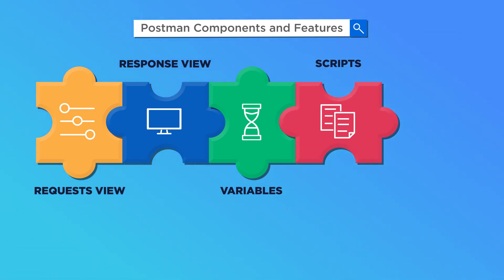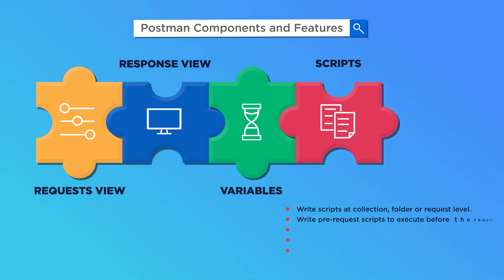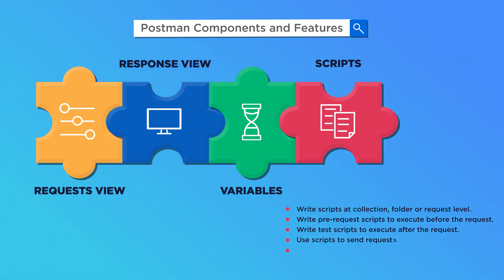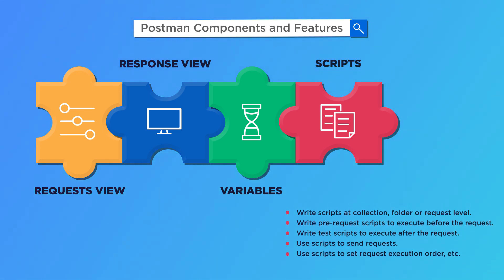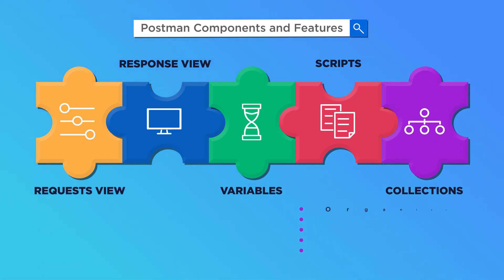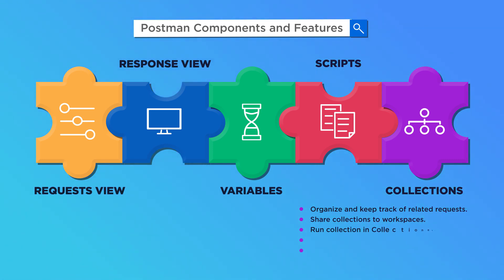The scripts component of Postman is used to write scripts at collection, folder, or request level; write pre-request scripts to execute before the request; write test scripts to execute after the request; use scripts to send requests; and use scripts to set request execution order. The collections part of Postman enables us to organize and keep track of related requests, share collections to workspaces, run a collection in the collection runner, create forks and merge changes, and view changes in the changelog.